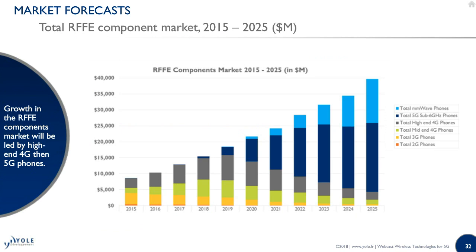Here is an overview of the market forecast for the RF front-end component market. The handset market is consolidating around 4G devices up to 2019, and the introduction of 5G devices will appear in 2019 as well with sub-6 GHz technologies. The first 5G millimeter wave devices will also appear in 2019. The overall front-end market value is expected to reach $30 billion by 2023.